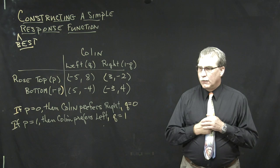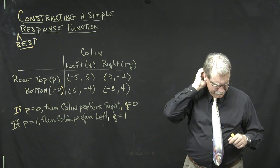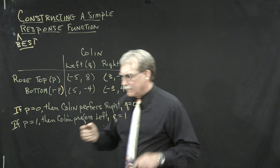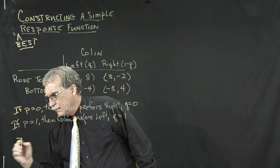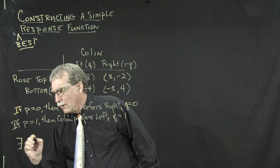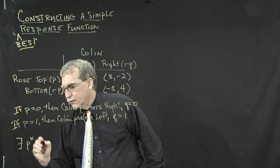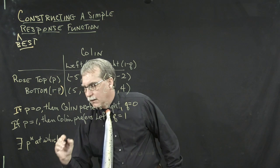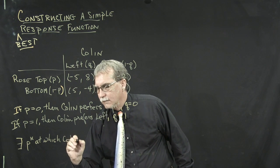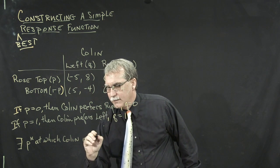Now, what do we get from this? Well, this suggests that there exists some value, P star, at which Colin is indifferent.